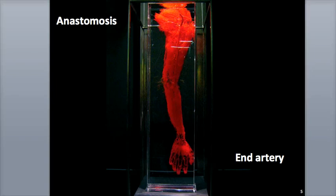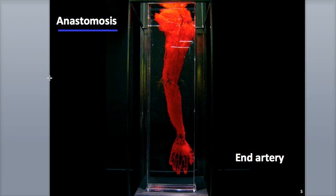As the arteries branch throughout the body, multiple arteries are responsible for delivering blood to the body's tissues. An anastomosis is a joining together of two or more arteries delivering blood to the same area. These are helpful for providing side routes, or detours, called collateral circulation, for blood to reach an organ or body region if the path of blood flow in an artery is blocked.